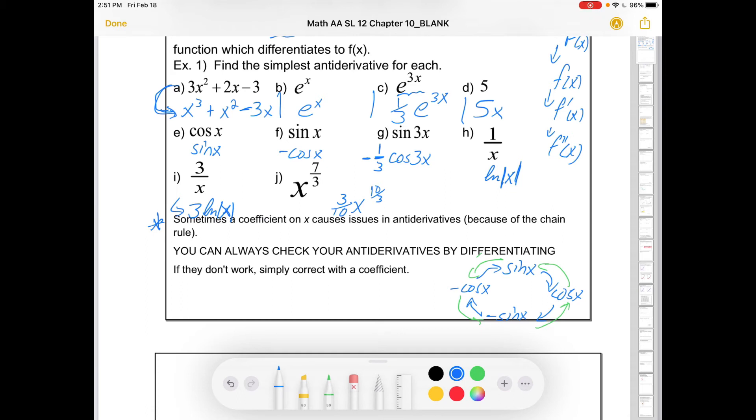So a couple of things to notice here. Sometimes a coefficient on x causes issues in the anti-derivative because of the chain rule. But you can always check your anti-derivatives. Sorry. You can? No, no, no, no. You must always check your anti-derivatives by differentiating. Just like you'll always be better at multiplying than dividing, you'll probably always be better at differentiating than anti-differentiating.